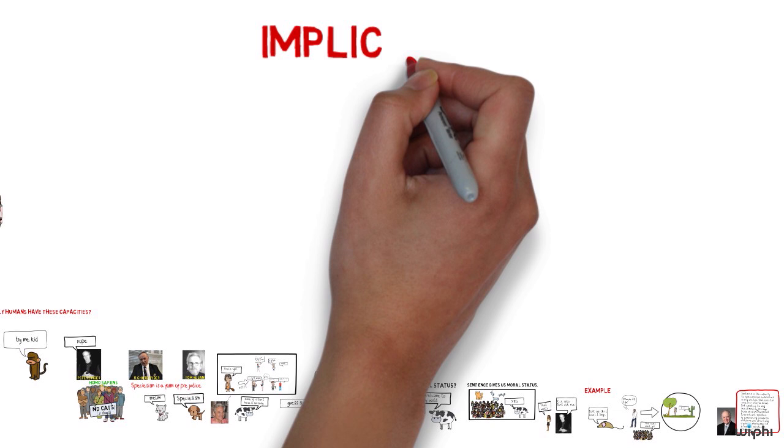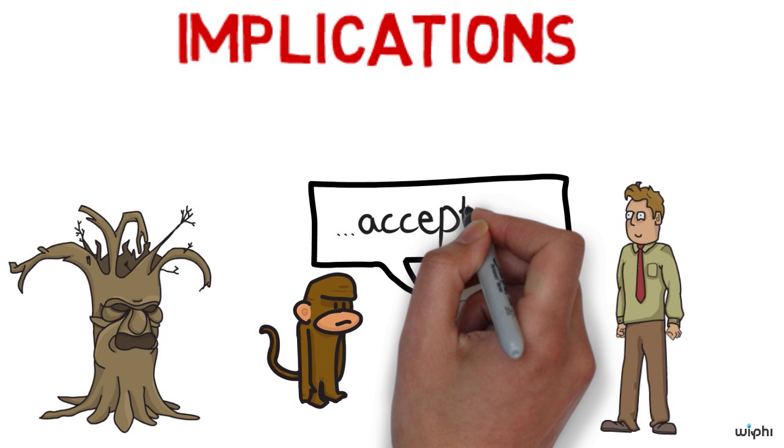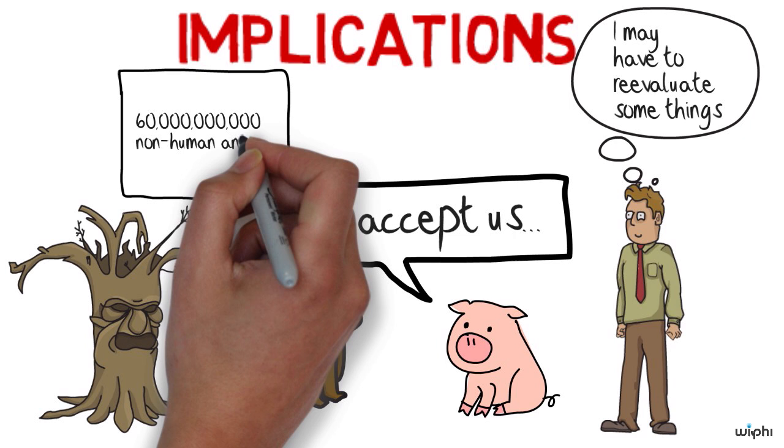Now obviously which of these theories of moral status we accept is going to have profound implications for how we live our lives. For example, if we decide that animals or plants have moral status, then it will turn out that a lot of what we currently do in everyday life is deeply morally problematic, including but not remotely limited to the fact that we currently kill over 60 billion non-human animals a year for food alone.